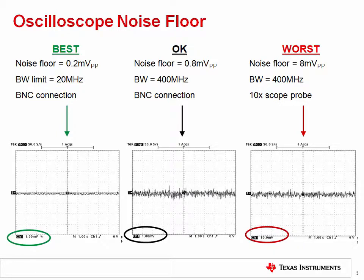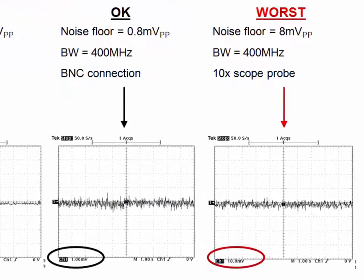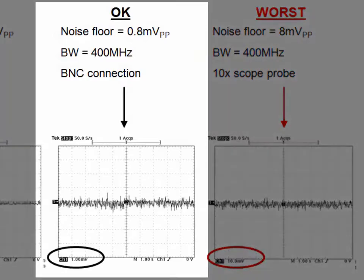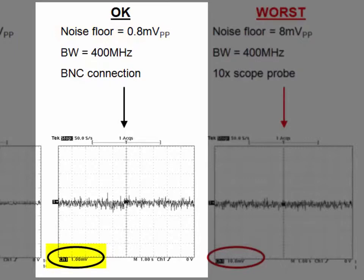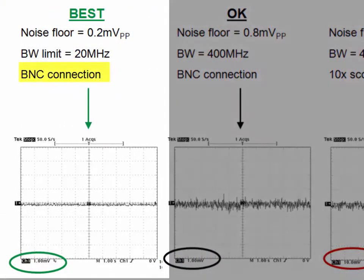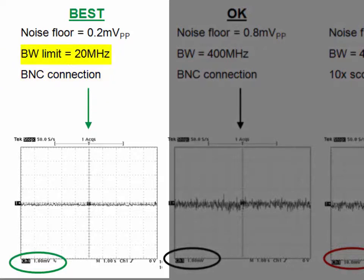Here we show a typical digital oscilloscope measuring its noise floor in three different configurations. The worst configuration, shown on the right, has a noise floor of 8 millivolts peak-to-peak, using a 10x scope probe with the scope bandwidth at the full 400 MHz. Replacing the 10x probe with a direct BNC connection effectively decreases the noise floor by a factor of 10, with the vertical range changing from 10 mV/div to 1 mV/div. The best noise floor occurs when a BNC connection is combined with the bandwidth limiting feature, reducing noise from 0.8 mV to 0.2 mV.